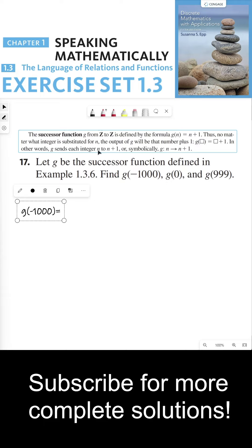In other words, g sends each integer n to n + 1. So what is g(-1000)? According to this definition, it would be -999 because that is -1000 + 1.